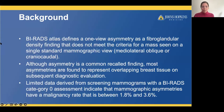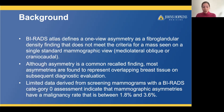I want to start with some background. The BI-RADS atlas defines a 1-view asymmetry as a fibroglandular density finding that does not meet the criteria for a mass seen on a single standard mammographic view, either the mediolateral oblique or the craniocaudal view. Asymmetry is a common recalled finding, but most of these asymmetries are found to represent overlapping breast tissue on subsequent diagnostic evaluation. Limited data derived from screening mammograms given a BI-RADS category zero assessment indicate that mammographic asymmetries have a low malignancy rate between 1.8 and 3.6 percent.